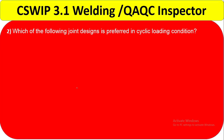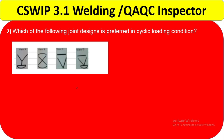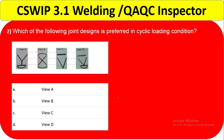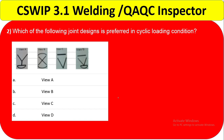Question number 2: which of the following joint designs is preferred in cyclic loading conditions? There are 4 options with figures mentioned: View A, View B, View C, and View D. Which view will be the correct answer?